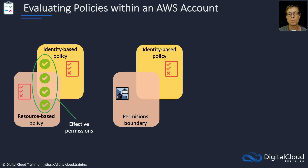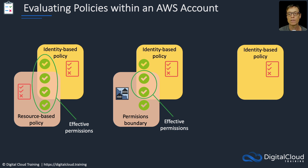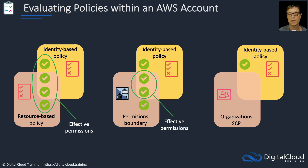We then have an identity-based policy with a permissions boundary, and again there are four allow permissions. The effective permissions will be where there's overlap between the two — you need to have both the identity-based policy giving you an allow for that particular action, but you also need to be allowed through the permissions boundary as well. Lastly, we have the identity-based policy with an organization's SCP, which is very similar to a permissions boundary but applied at the account level. The effective permissions are where the overlap is between the identity-based policies and the organization's SCP. With both the permissions boundary and the organization's SCP, you need to be allowed in each of those policies as well as have the permissions through an identity-based policy.